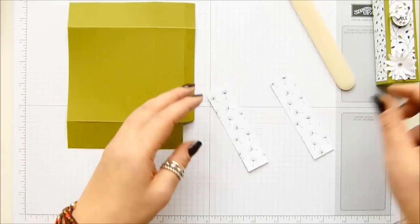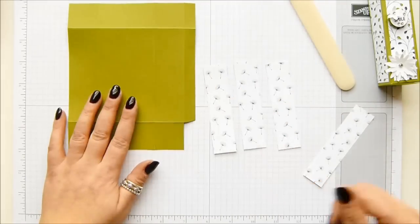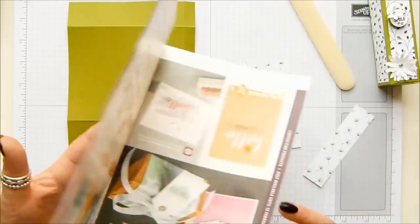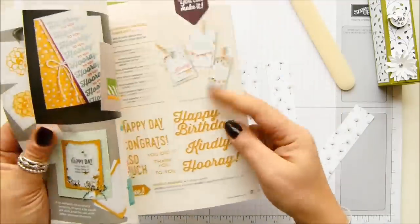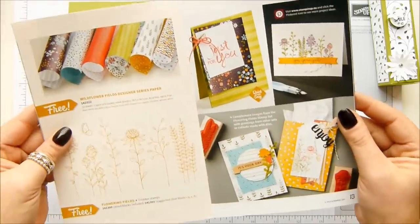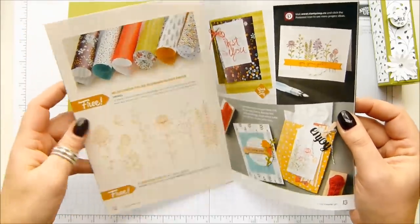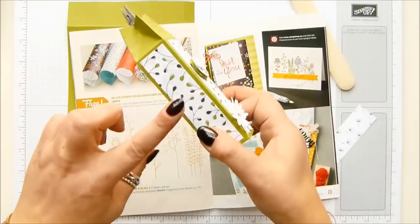We're going to stick our adhesive on now. It's always easier to do it when it's separated. This is celebration paper, this is Wildflower Fields. This is the celebration catalog. If you haven't got one, let me know. I have English, French, and German, happy to post them out free of charge.